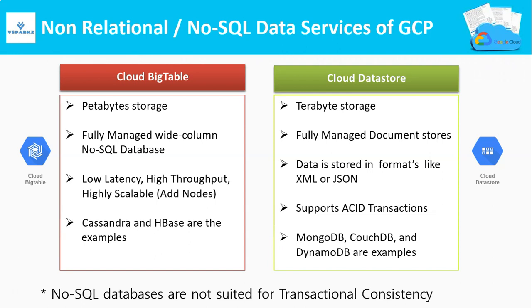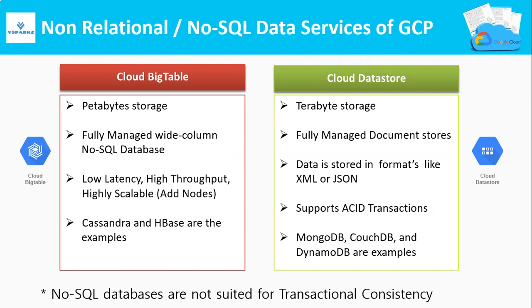Under Non-Relational Database Services, you have Cloud Bigtable, Cloud Datastore, and Cloud Firestore. Cloud Bigtable has petabyte capacity and is a fully managed wide-column NoSQL DB with low latency, high throughput, and high scalability — similar to Cassandra and HBase. Cloud Datastore has up to TB capacity and is a fully managed Document DB storing data in XML or JSON format. It also supports ACID transactions. Examples of this kind are MongoDB, CouchDB, and DynamoDB.